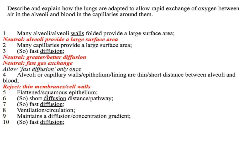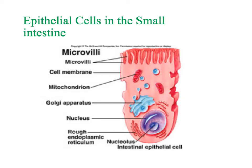Here's a classic long answer question about alveoli, which just goes through what I said. Epithelial cells in the small intestine are slightly different. The main adaptation of the actual cells themselves is that they've got microvilli, which increase the surface area. So that's the main way, using Fick's Law, that they're adapted - they've got a large surface area using the microvilli.